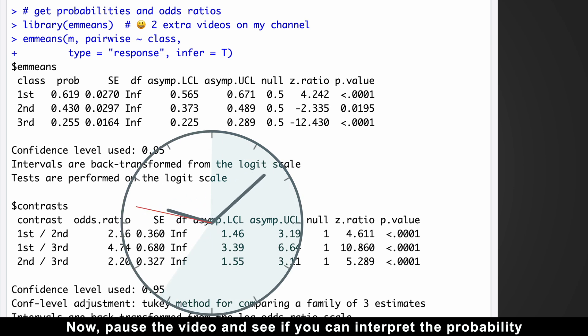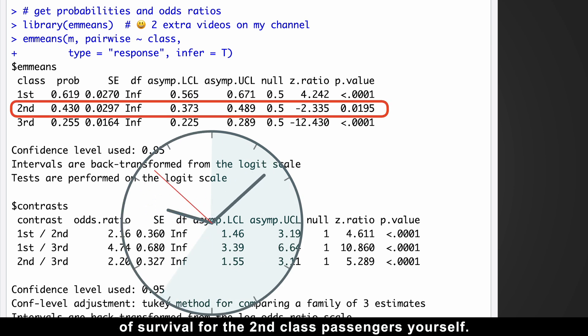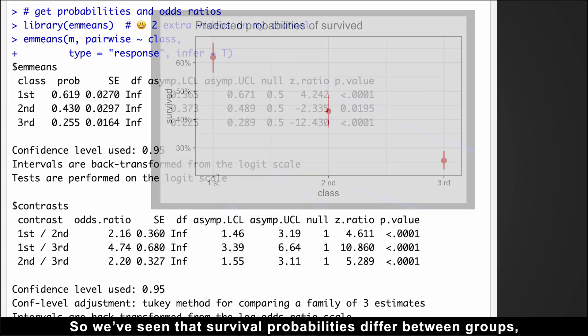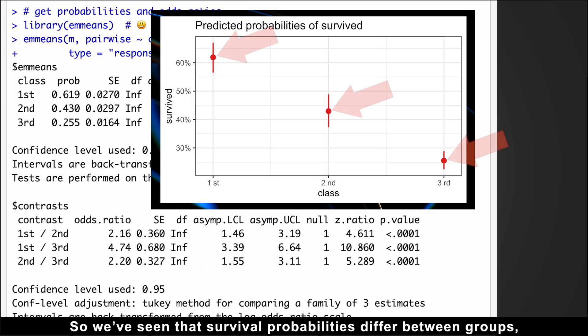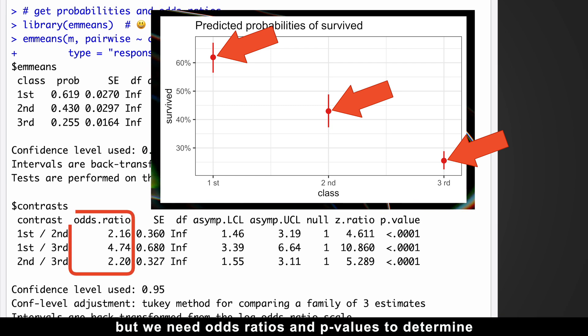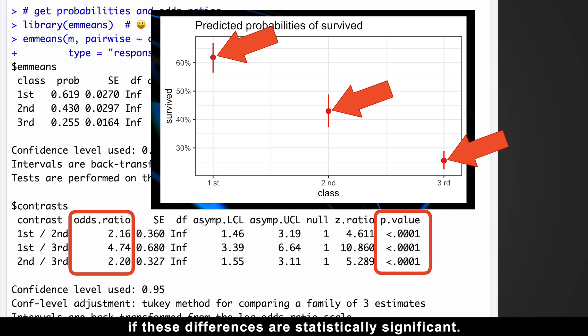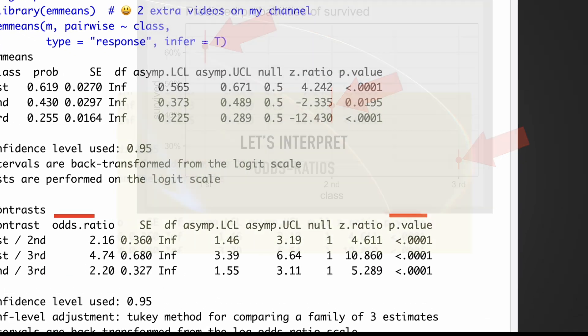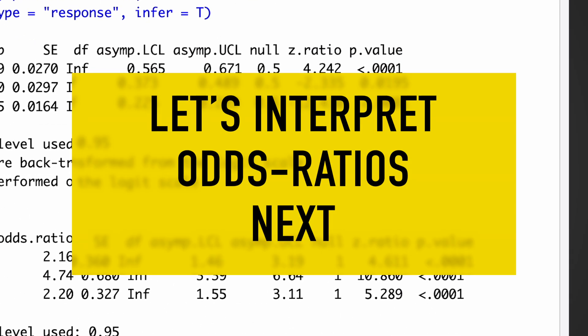Now pause the video and see if you can interpret the probability of survival for the second-class passengers yourself. So we've seen that survival probabilities differ between groups, but we need odds ratios and p-values to determine if these differences are statistically significant. Thus, let's interpret odds ratios next.